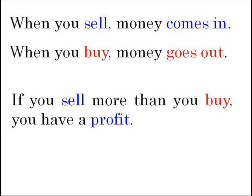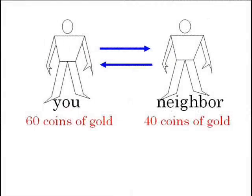If you are having a profit, it means your money is increasing. If you start with 50 coins of gold, with profit your money may increase to, say, 60 coins of gold. But if you have 60 coins of gold, it means your neighbor now has 40 coins of gold. If you are getting richer, it means your neighbor is getting poorer.